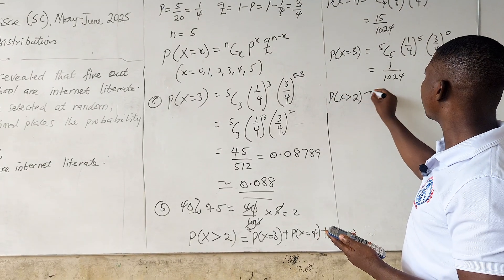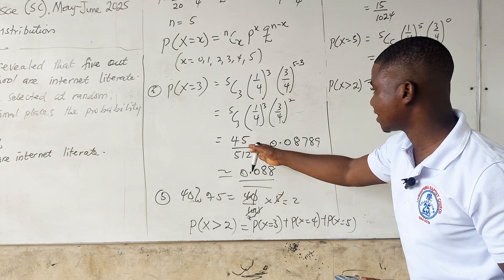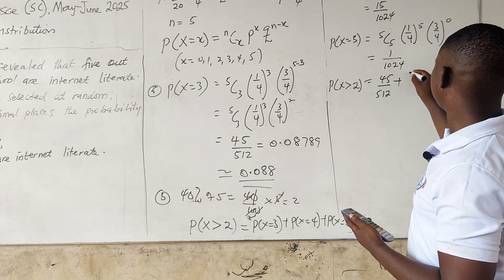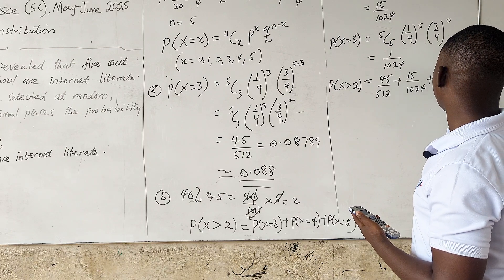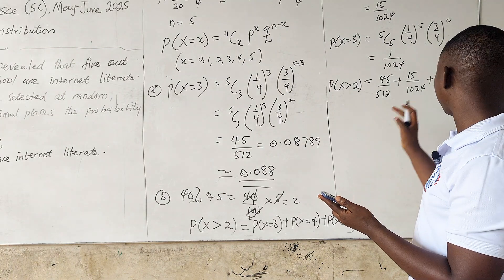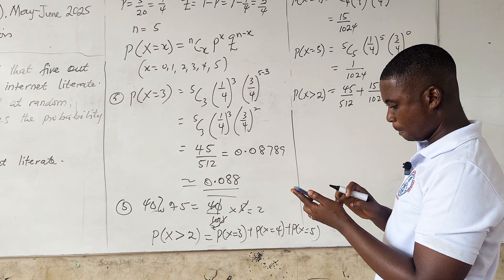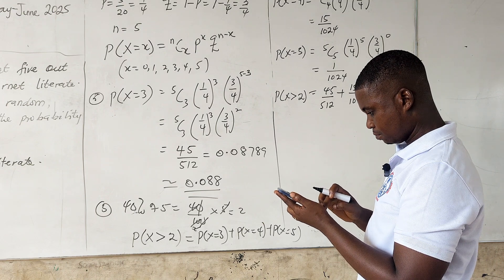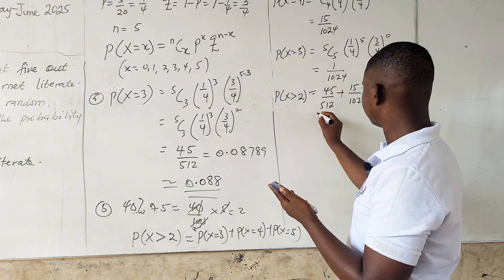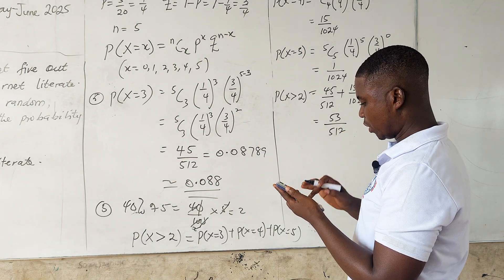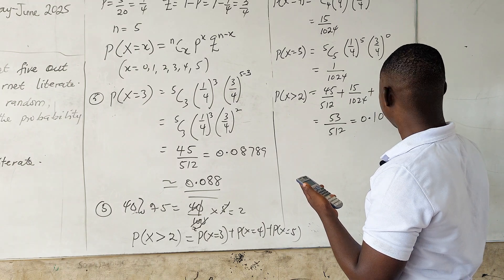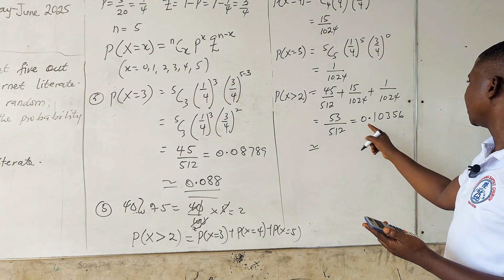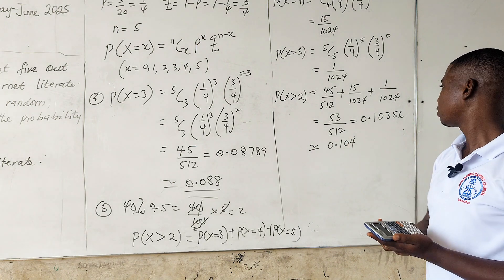So P(X > 2) = P(X=3) + P(X=4) + P(X=5) = 45/512 + 15/1024 + 1/1024. Converting: 90/1024 + 15/1024 + 1/1024 = 223/1024 + 45/512 = which gives us 0.10352... Rounded to three decimal places, the answer is 0.104.